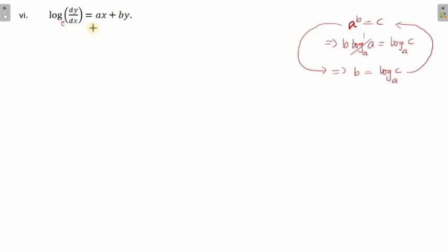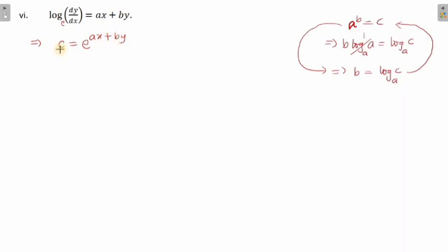Here e plays the role of a, c plays the role of dy/dx, and b plays the role of the entire exponent expression. So I can write: since a to the power b equals c, and a is e, we get dy/dx equals e to the power of the entire expression. Now your work is easy — separate the variables: e to the power minus by dy equals e to the power ax dx.